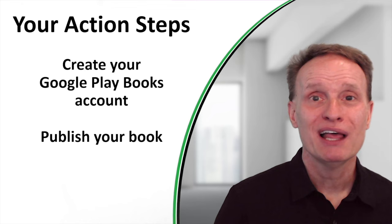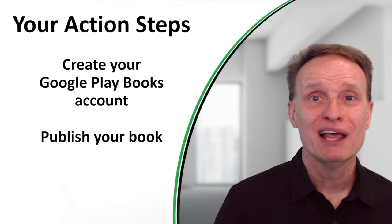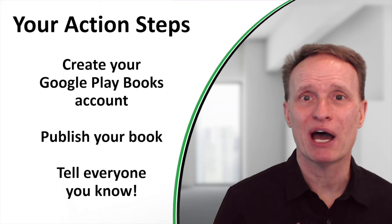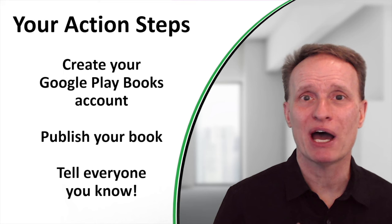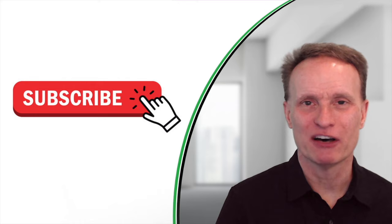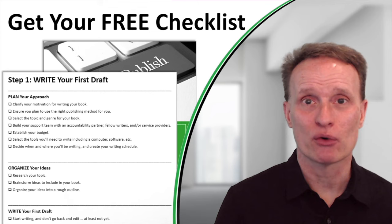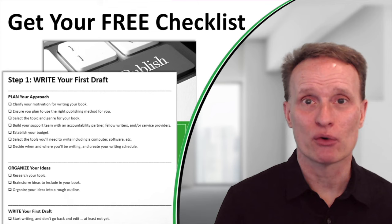Your action steps: first, go create your account on Google Play just like I showed you. Then publish your book. Once it's available, let people know — post on social media, send emails, let people know your book is on Google Play Books. As a reminder, hit that subscribe button if you want more videos about writing and self-publishing. Visit my website using the link in the description to download the free self-publishing checklist. Happy writing!